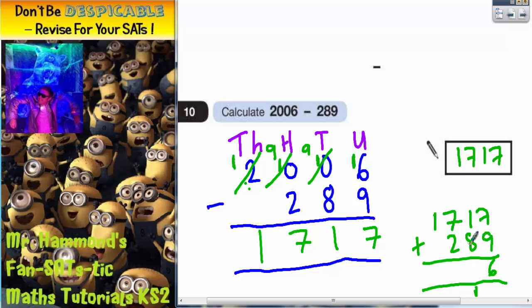One plus eight is nine, plus that one is ten, put your zero in, carry the one. One plus one plus one is two. So as you can see, we have got back to 2006, so we know that